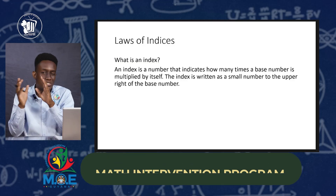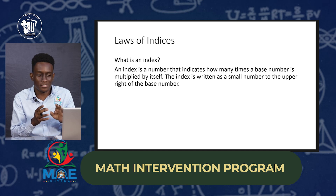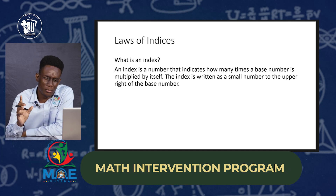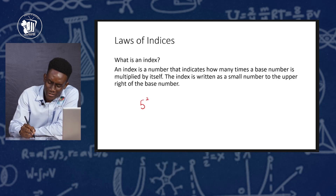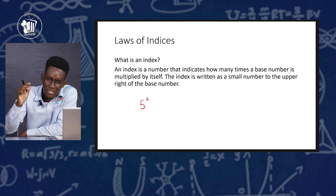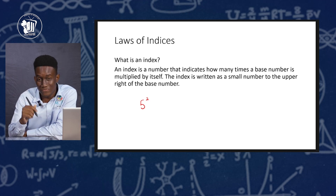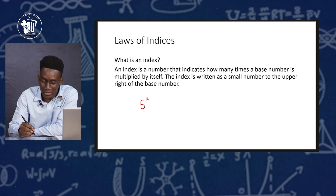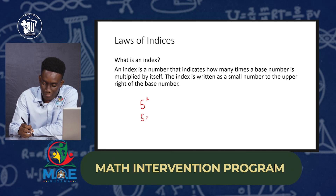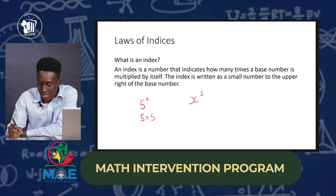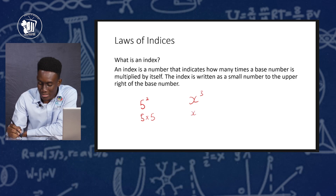So what is an index? As we saw in the previous slide, an index is a small number at the top. But what exactly does this number do? Now let's say I had 5 raised to the second power — this small number, the top 2, is telling you that this 5 is multiplied by itself two times. So 5 raised to the second power is the same as 5 multiplied by 5. And if I had x raised to the third power, x multiplied by x multiplied by x. So that is what an index represents.